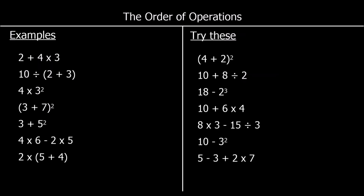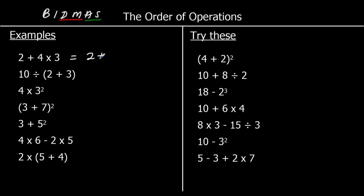So let's look at some questions. We're going to do these calculations — I'm not just going to go from left to right, I need to do them in the correct order. I'll write BIDMAS at the top. Do we have brackets in the first one? We don't. We have no indices. We do have division and multiplication — we've got 4 times 3, so I'm going to do that first. 4 times 3 is 12, so then we've got 2 plus 12, which is 14.